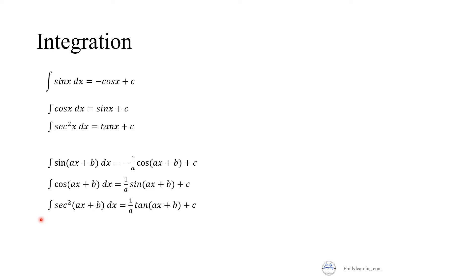For integration of trigonometric functions, sine must be power 1, cosine must be power 1, and secant must be power 2. Otherwise you need to use a trig identity to integrate them. When you integrate sine you get minus cosine, integrate cosine you get sine, and integrate secant squared you get tangent. The angle never changes — if the input is ax + b, the output is also ax + b. When the coefficient of x is not 1, a factor of 1/a appears. There is no quotient rule or product rule for integration, so you can only use identities. All angles must be in radian mode.